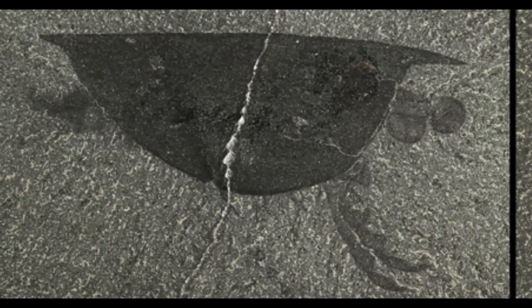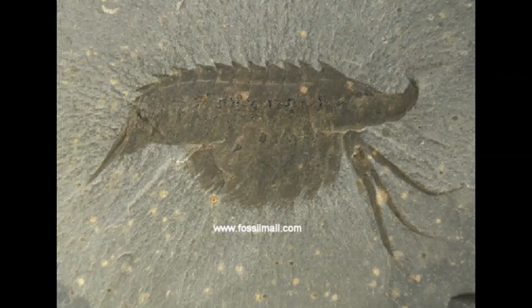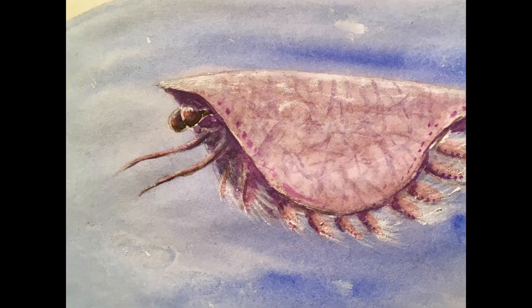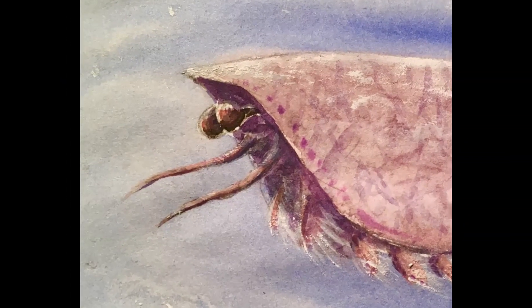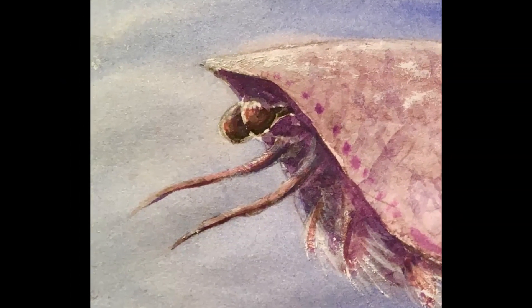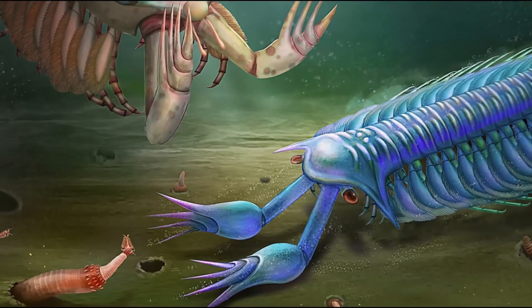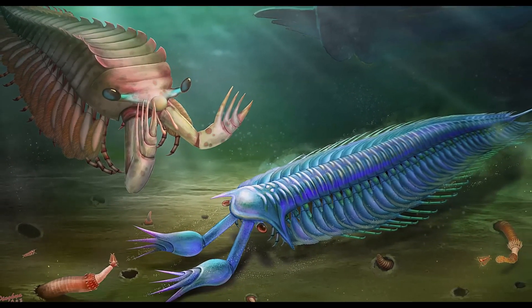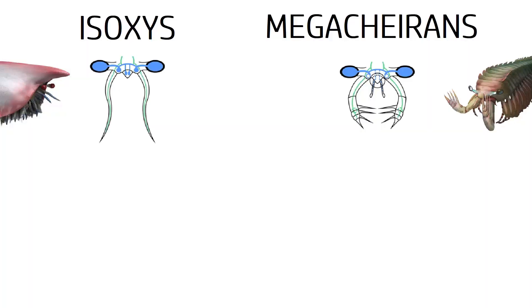Isoxys, known for their carapaces that end in two spines, and megacheirans, the great appendage arthropods, coexisted in the same waters. While Isoxys used its first appendage looking for small animals and particles of food, megacheirans walked around the bottom using their first appendage to catch their prey. The first appendage of both Isoxys and megacheirans is located behind their eyes.